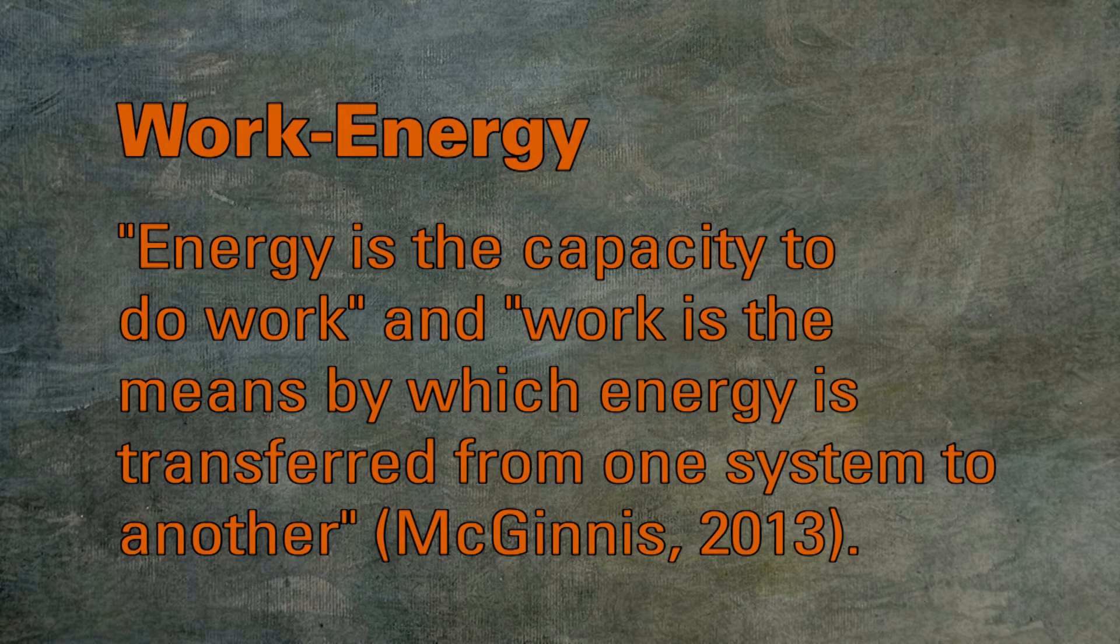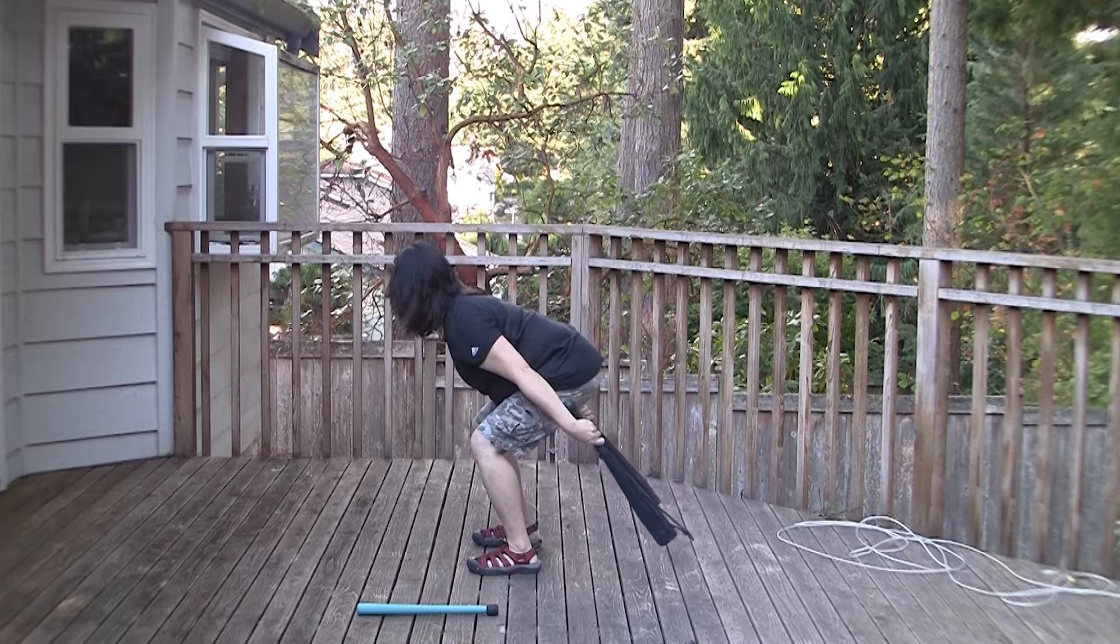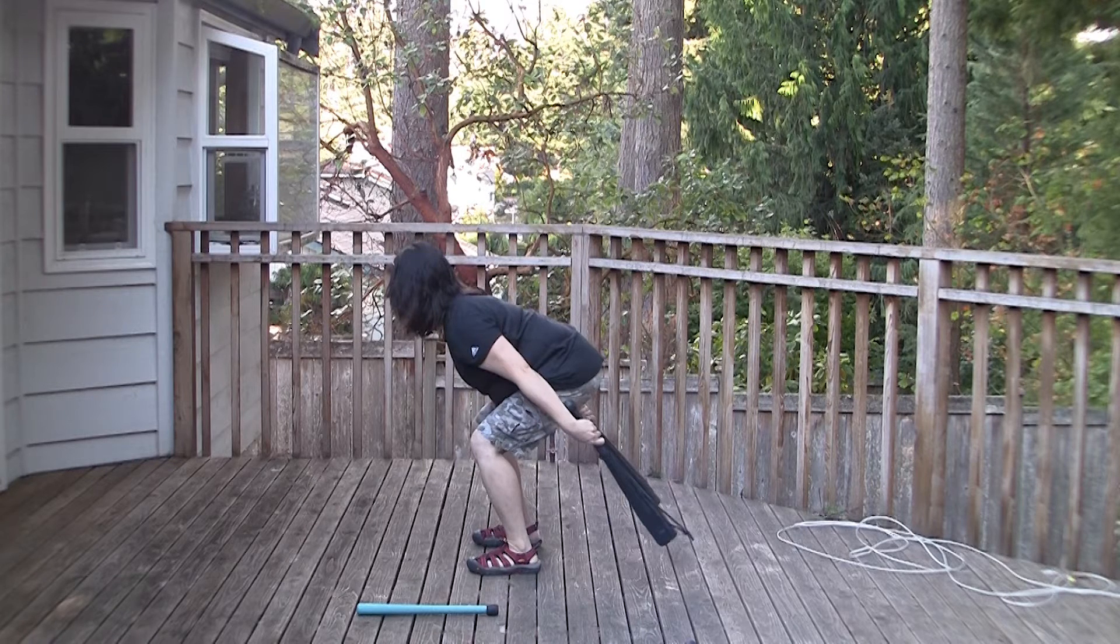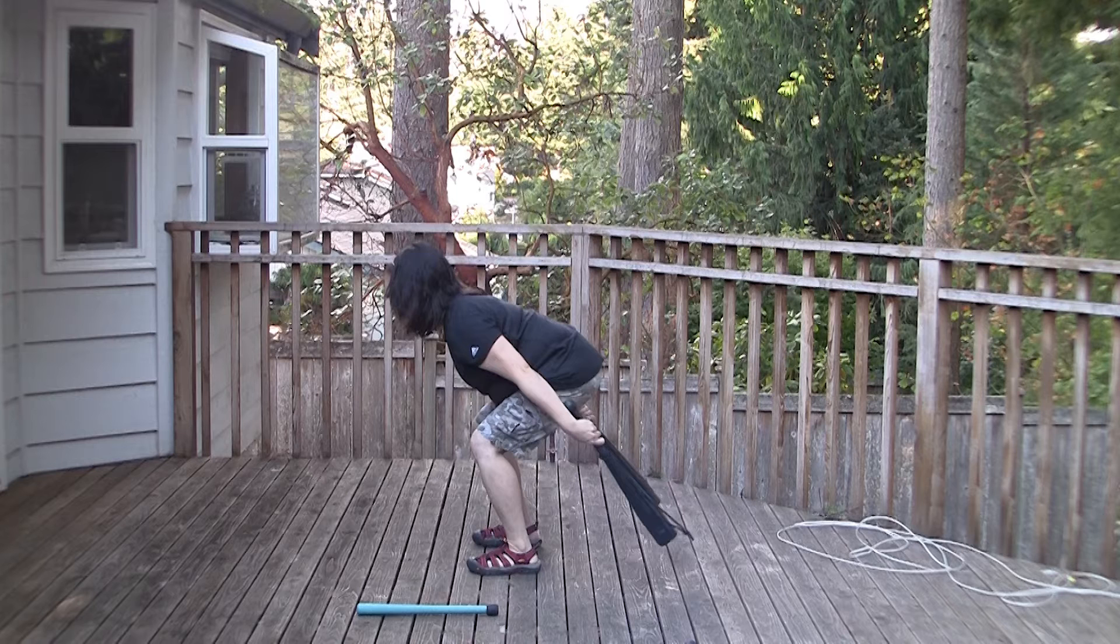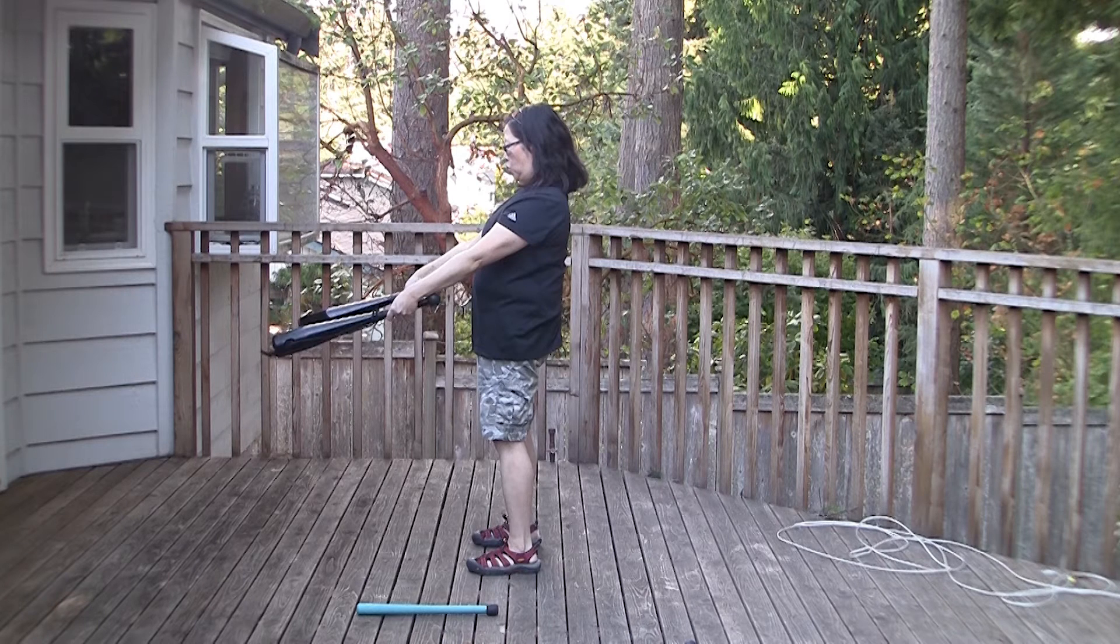Think of the club as a pendulum, with the athlete's arm as the pendulum's arm. The bottom position, or the lowest point in the swing, represents the expression of maximum kinetic energy. Likewise, the top portion, or the highest portion in the swing, represents the maximum potential energy of the club.